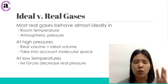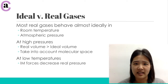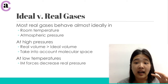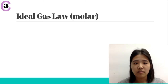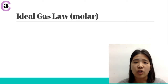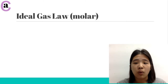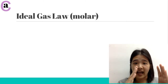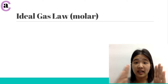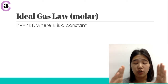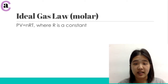So those are the main ways that ideal and real gases differ. But again, in normal circumstances they're very, very similar. So what exactly is the ideal gas law? There are sort of two versions of it. The first one we're going to look at is the molar version. So when you have a sample of gas and you are measuring it in moles, you're going to use this equation, which is PV equals nRT.